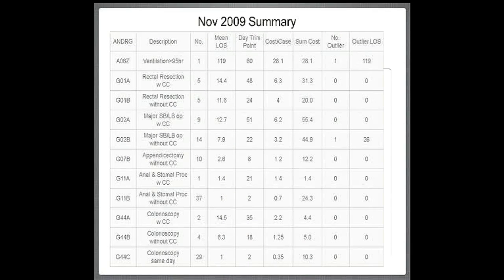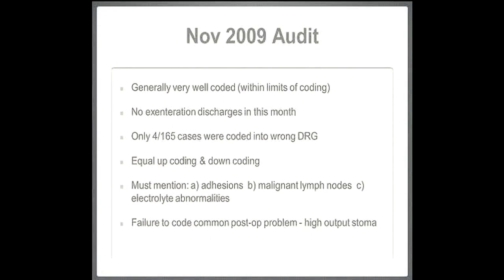This is a summary of the data. In colorectal surgery in the average month, we chop out some rectums — half come out with complications and half without — and that was their length of stays and how much we got for them. We also do some small bowel and large bowel resections, appendectomies, operations on the anorectal area, and a whole variety of colonoscopies. I thought things were remarkably well coded within the limits of the coding system. I thought four of the 165 cases were in the wrong DRG, but equally we found people coded up and an equal number coded down where I thought they'd been overcoded. We found things like adhesions and malignant nodes — if we didn't mention those, it actually underscored us, so it was really important to be particular in our documentation.